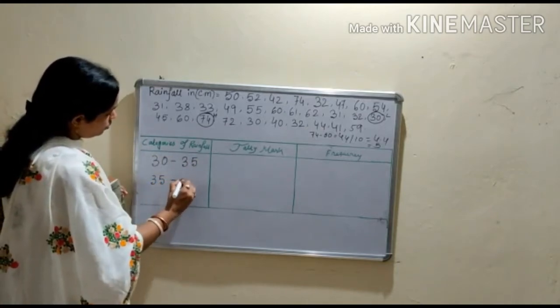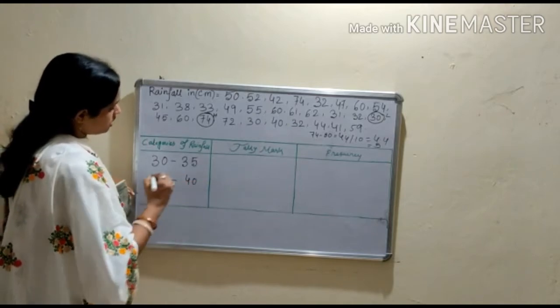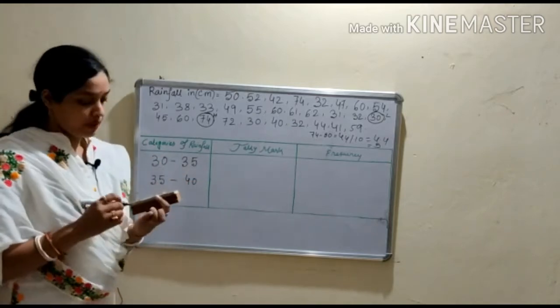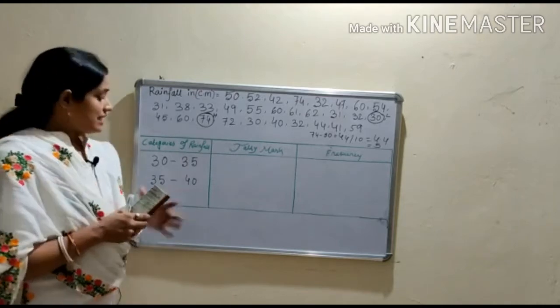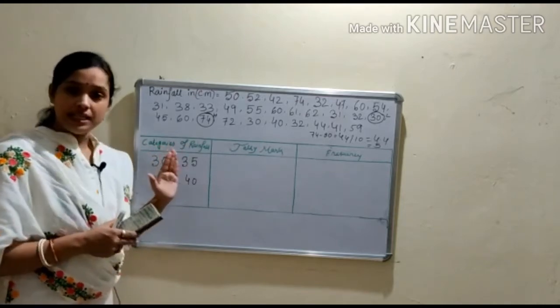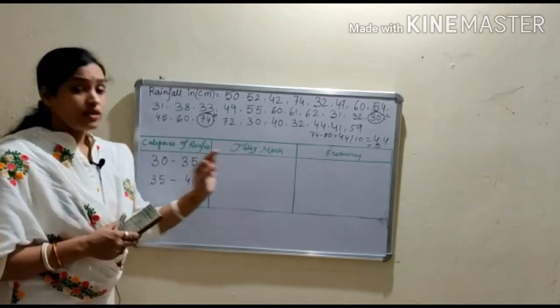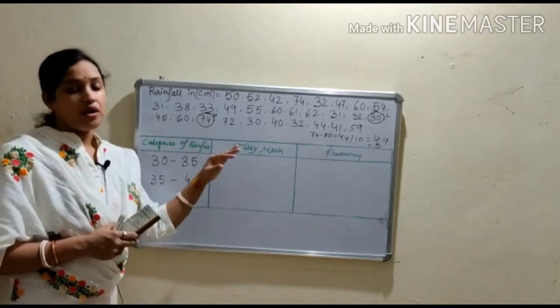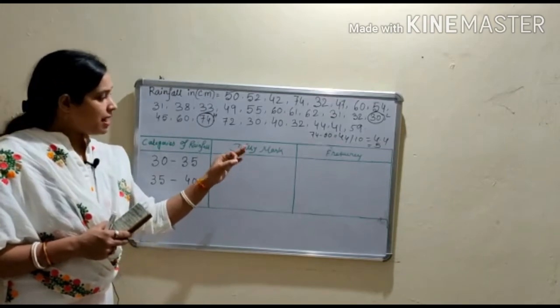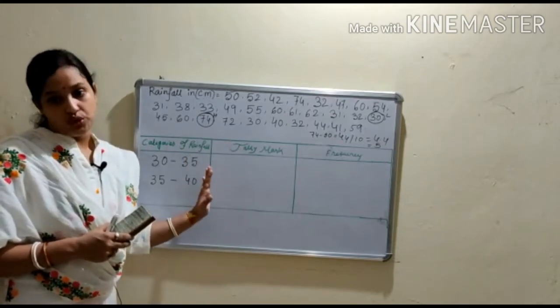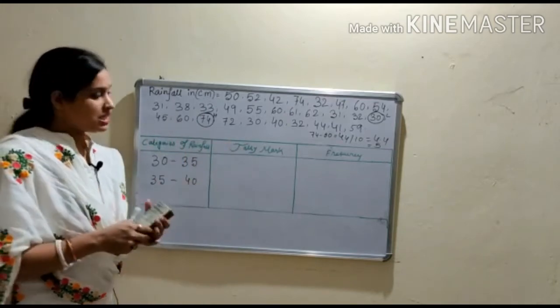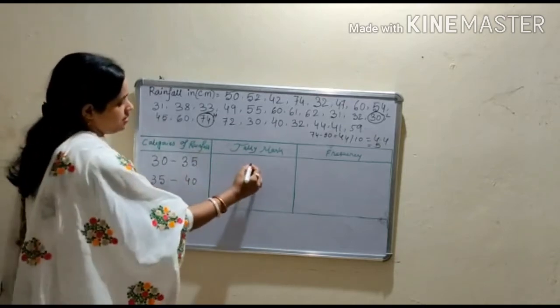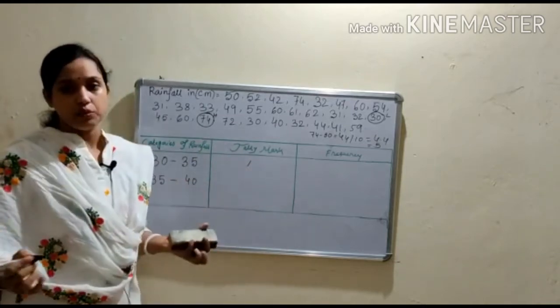Next in frequency distribution, we found tally mark. For making frequency distribution, tally mark sign is always used. Example of such sign is in this way: 1, 2, 3, 4, 5, okay.